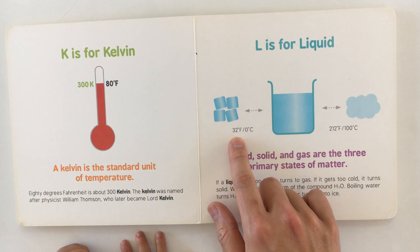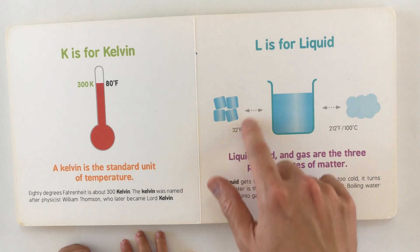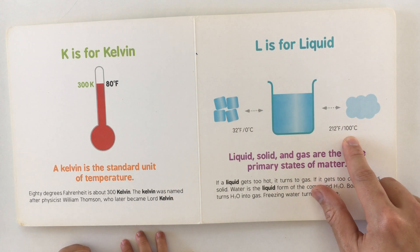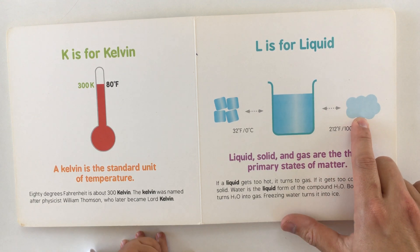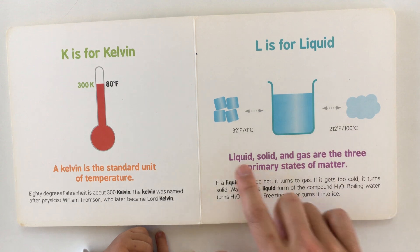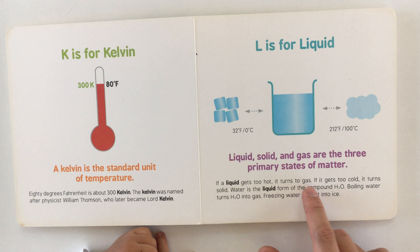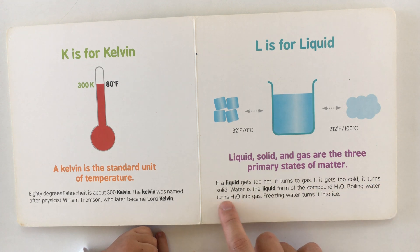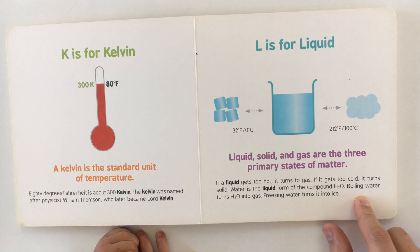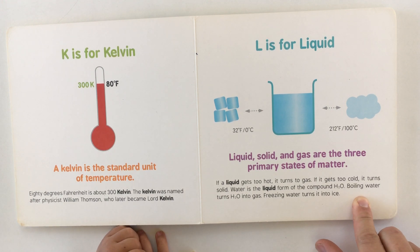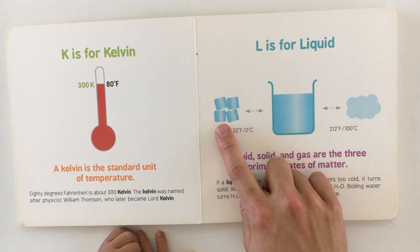L is for liquid. 32 degrees Fahrenheit, or zero degrees Celsius, is ice. At 100 degrees Celsius, or 212 degrees Fahrenheit, it becomes steam. Liquid, solid, and gas are the three primary states of matter. If a liquid gets too hot it turns to gas; if it gets too cold it turns to solid. Water is a liquid form of the compound H₂O.